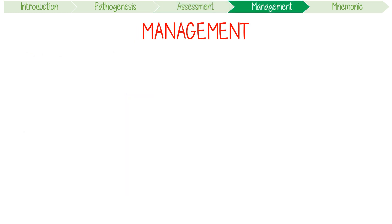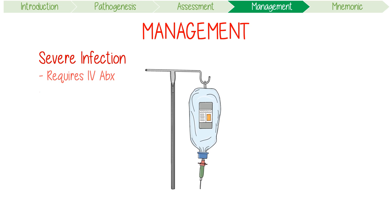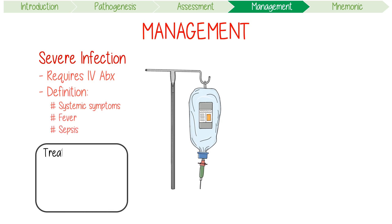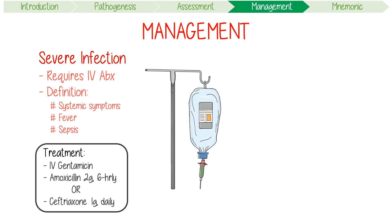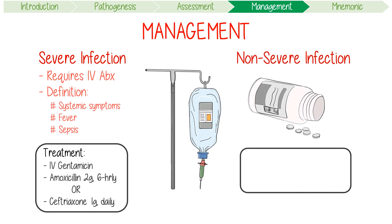Moving on to management, treatment is really based on how sick a patient actually is. A severe infection in an adult requires IV antibiotics — defined as patients who have systemic symptoms like tachycardia, a fever, or evidence of sepsis. Empirical therapy might include IV gentamicin plus amoxicillin 2g 6-hourly. Alternatively, monotherapy with ceftriaxone 1g IV daily can be used. In non-severe patients, oral treatment might include amoxicillin plus clavulanate 12-hourly for 14 days.